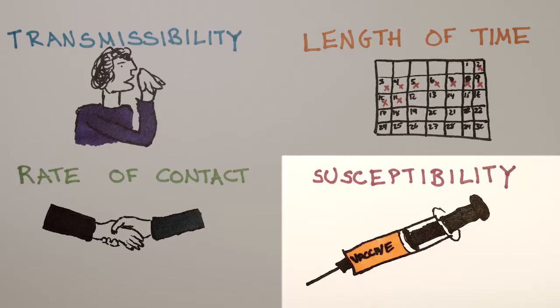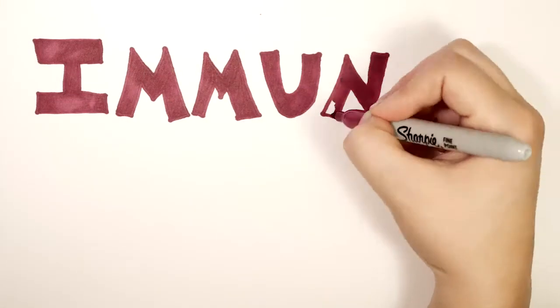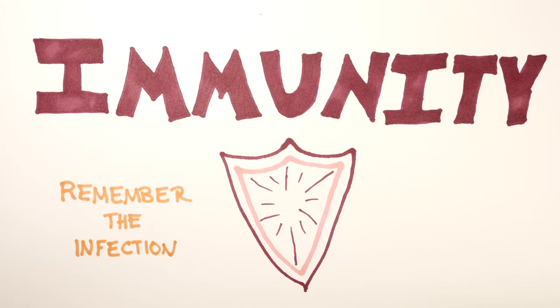The fourth factor is how susceptible the population is to the disease. A population that has never been exposed to a disease before will be 100% susceptible. However, if some people have had the disease and recovered, they could have immunity. In other words, their immune system remembers the infection, and if they are exposed again, they will fight it off quickly or they might even be completely protected. This lowers the susceptibility.